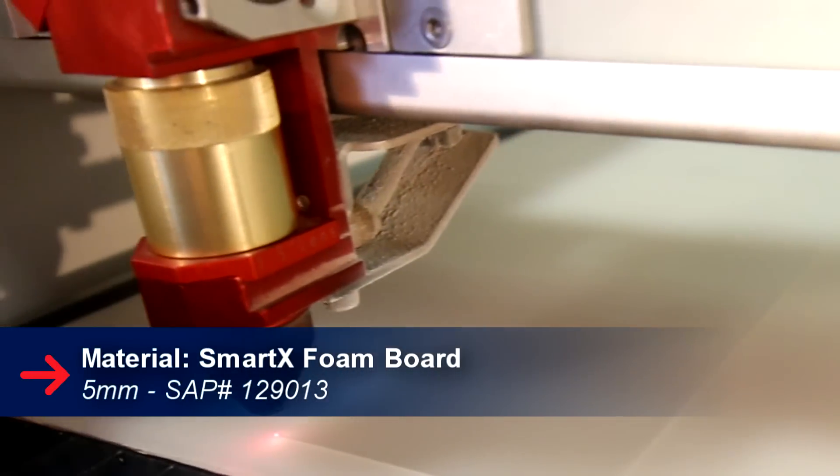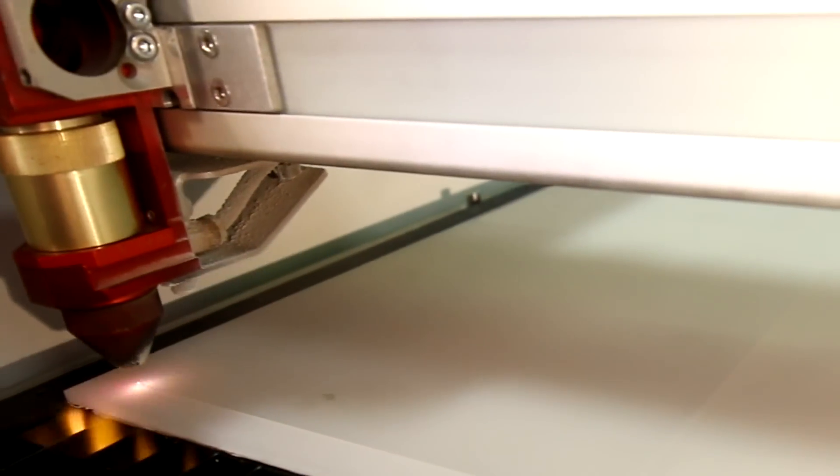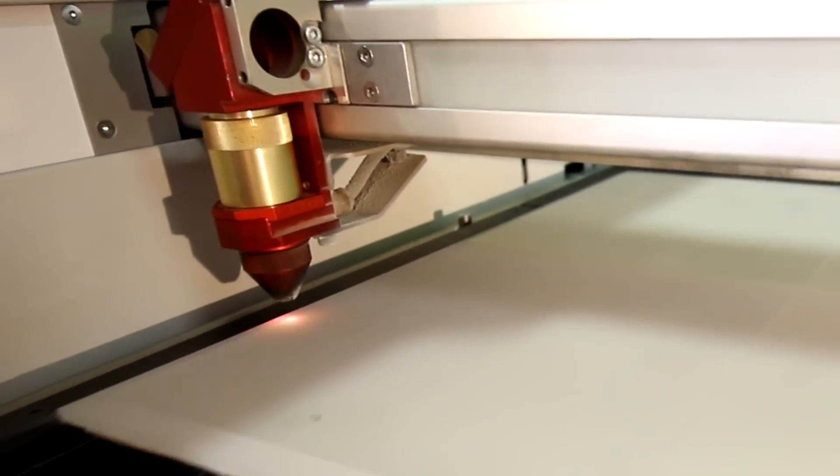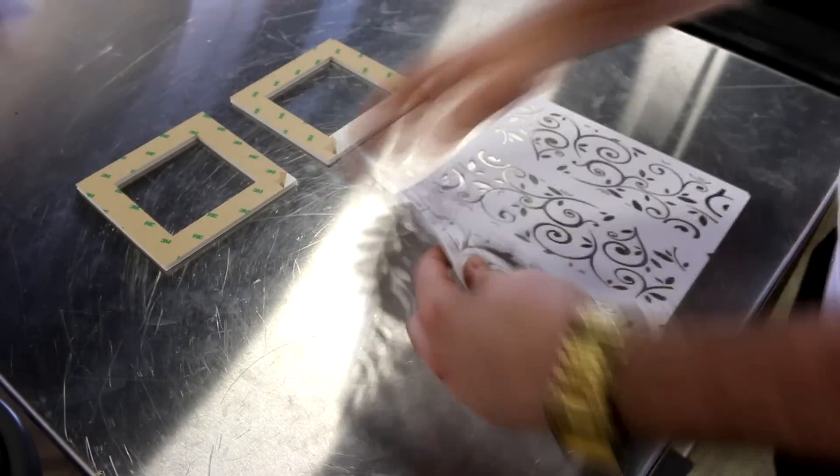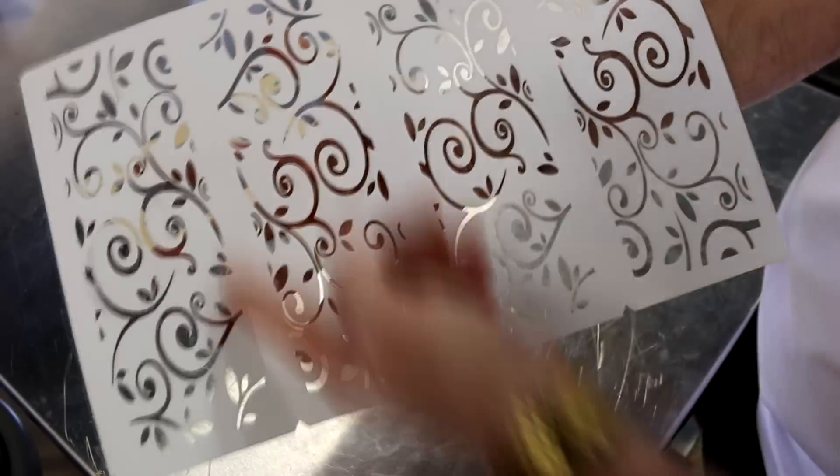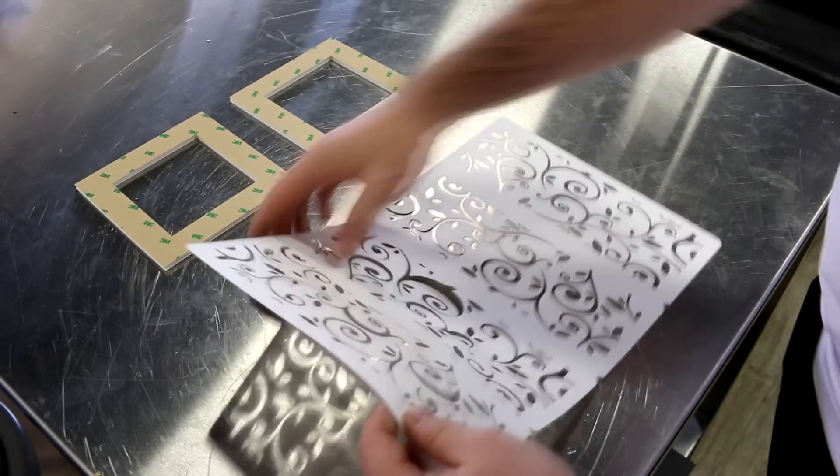Next we cut out our base. For our base we use our SmartX 5mm foam with adhesive on the back. Using our score lines we folded our lantern together and with a strip of adhesive glued it together.